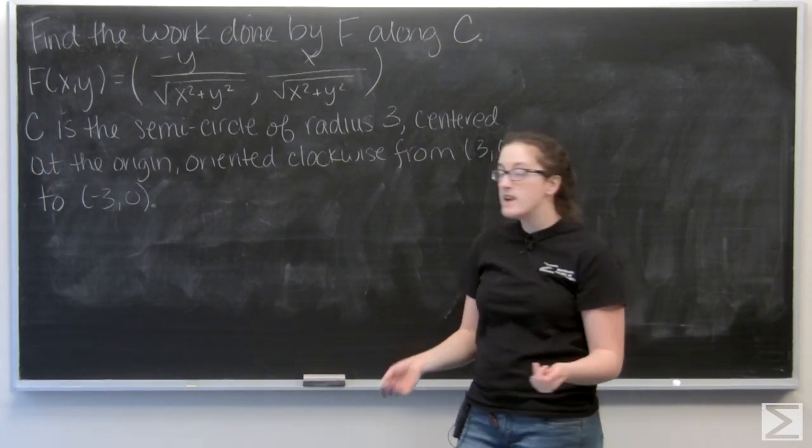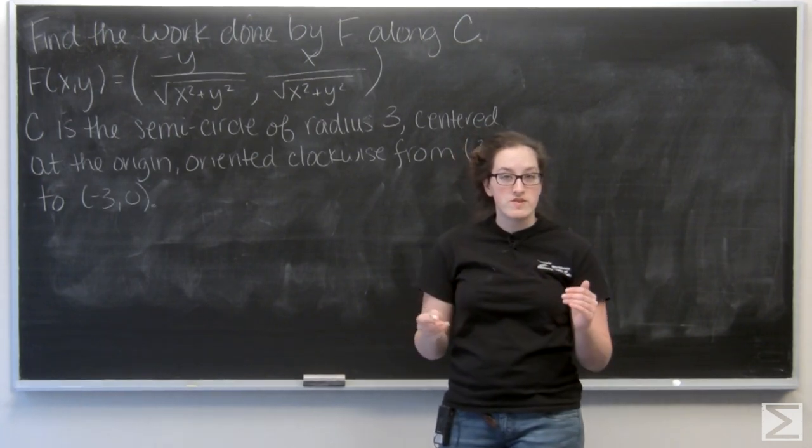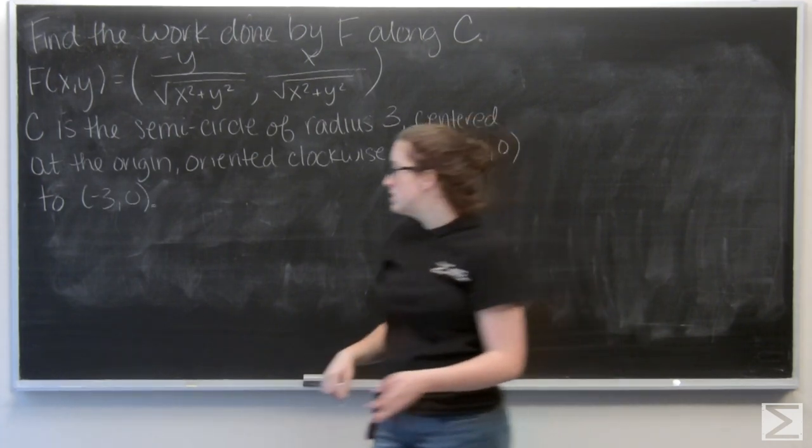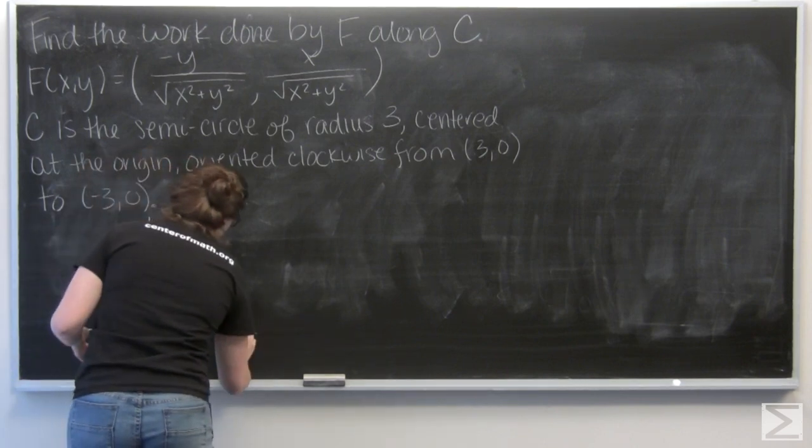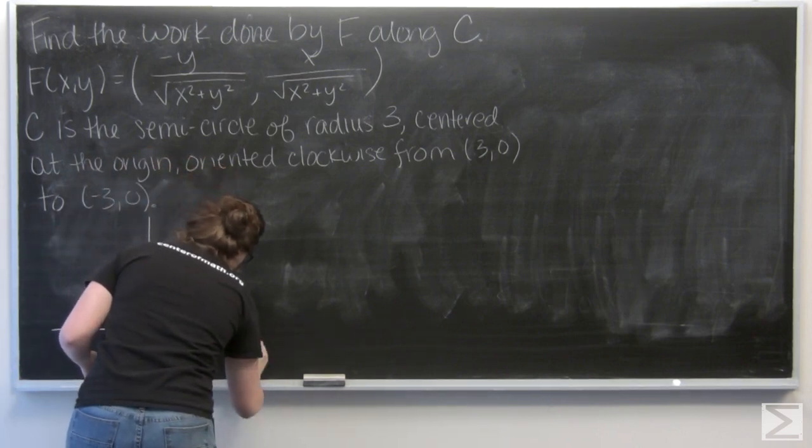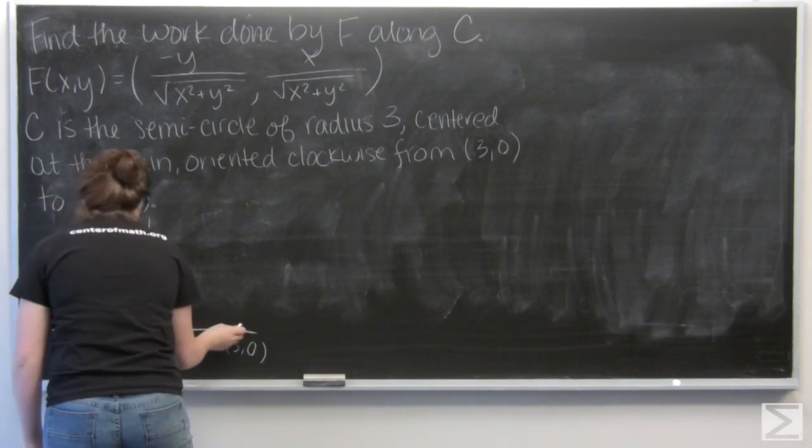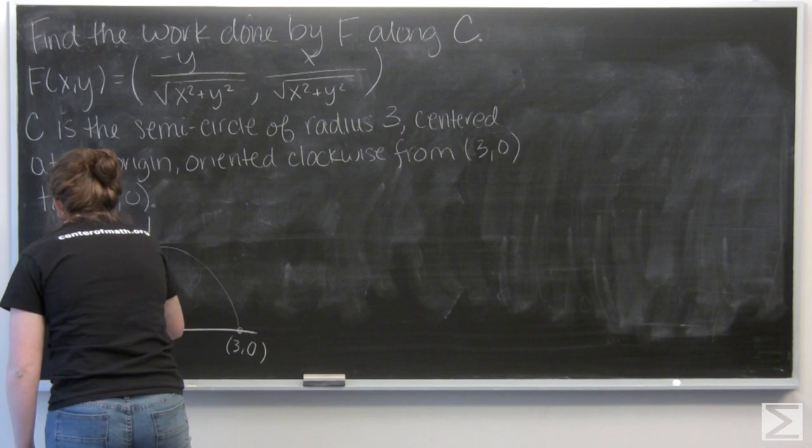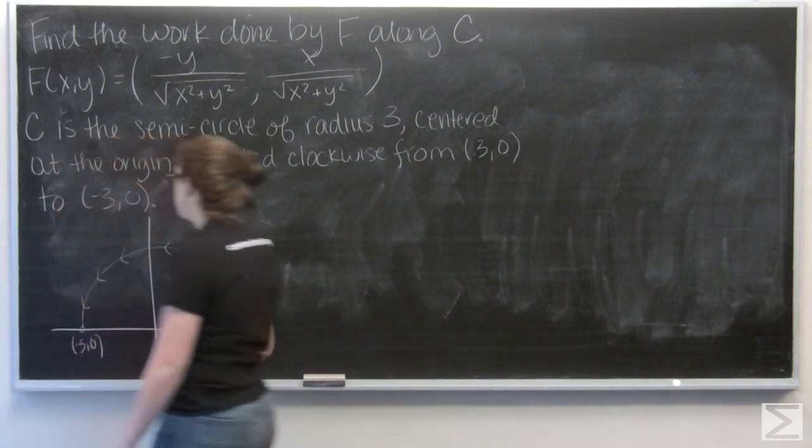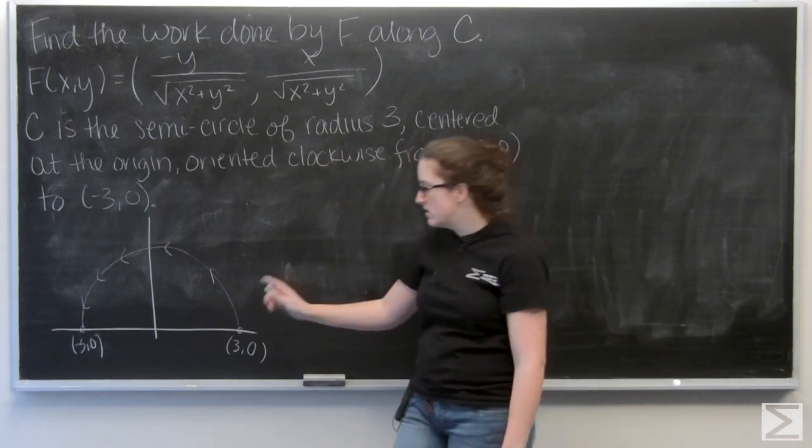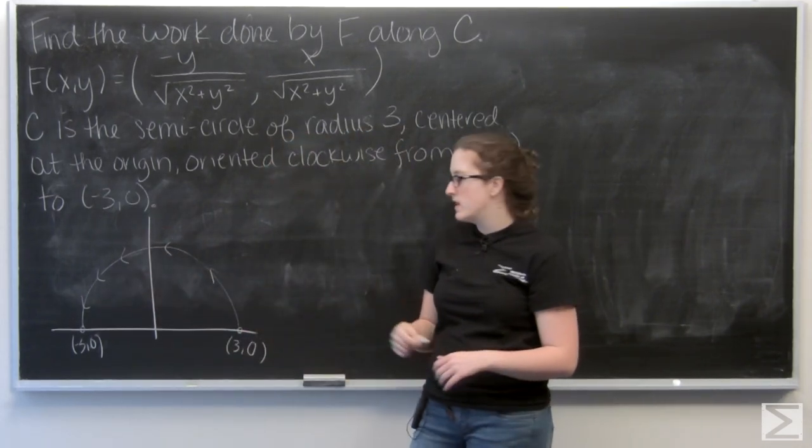Well, this time I'm not given a parametrization for C. So I'm going to draw the picture of C, and I'm going to write my own. So I have this semicircle going up and over from (3,0) to (-3,0).